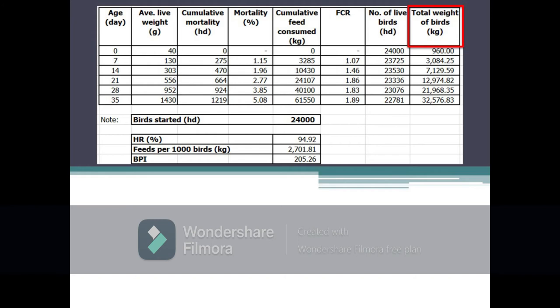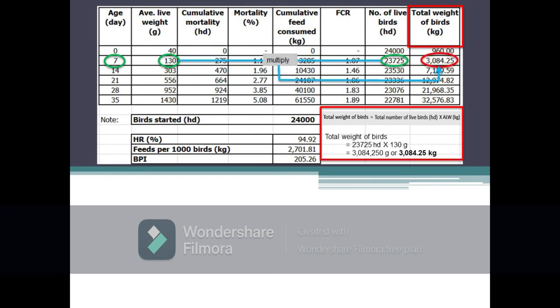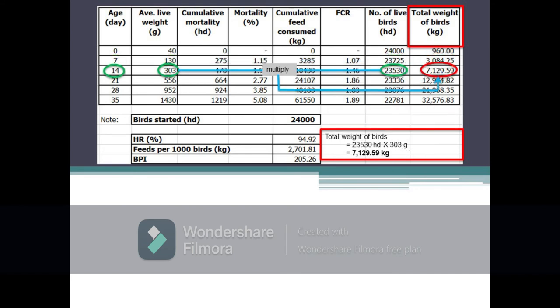Next parameter is the total weight of birds, which refers to the total weight of existing live birds at a given period. Total weight of birds is calculated as the product of the total number of live birds in a given period and the average weight of birds in the same period. For example, the average live weight at day seven is 130 grams while the total number of existing live birds is 23,725 birds, so the total weight of birds at day seven is 130 grams × 23,725 birds, equal to 3,084,250 grams or 3,084.25 kilograms. Total weight of birds in succeeding periods is calculated the same way.